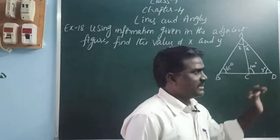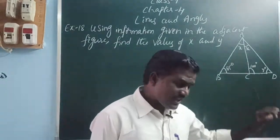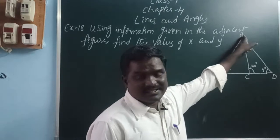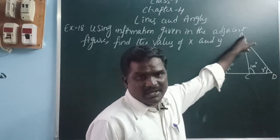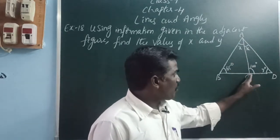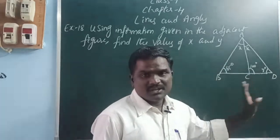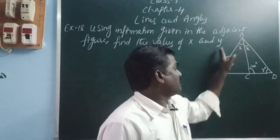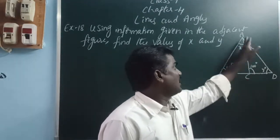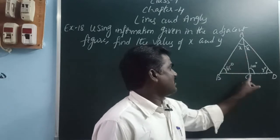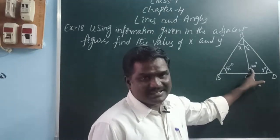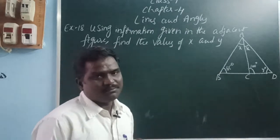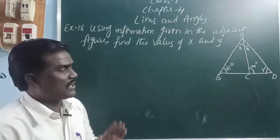Here we have triangle ABD. In triangle ABD, construct one line from vertex A joining point C on BD. Then how many triangles are formed? Two triangles: ABC and ACD. For triangle ABC, angle ACD is an exterior angle. So here we can find the values using the exterior angle property.